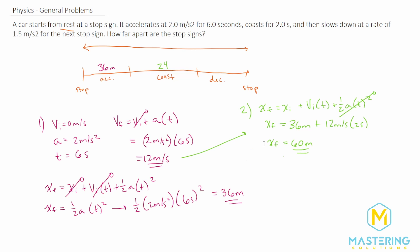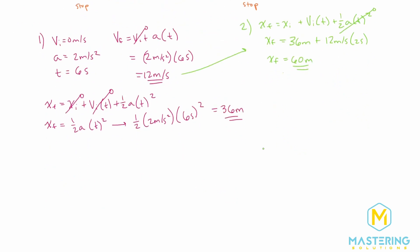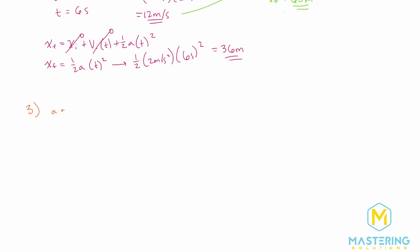For the last section, they say we slow down at a rate of 1.5 meters per second squared, so acceleration is negative 1.5 meters per second squared. We don't know how long we were driving here or how far we went, so we can't directly use the position kinematic equation. We need to solve for time first using v_final equals v_initial plus acceleration times time, isolating time.